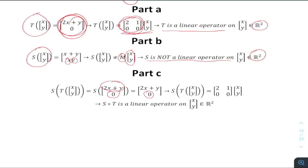Then we apply the S function using its definition: first times second. Checking if the resulting expression is linear in x and y — it is linear: 2 times x is linear, 1 times y is linear. This gives us the matrix that corresponds to the composite function g.